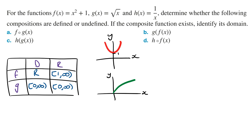From here, we can see that the range of the inner function, which is g of x, is a subset of the domain of the outer function, which is f of x. And so this means this composite function exists. If you are not sure whether the range of the inner function is a subset of the domain of the outer function, you can draw a number line and check.